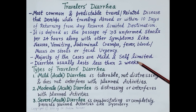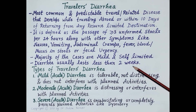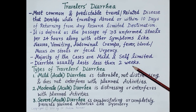A majority of cases of travelers' diarrhea are mild and self-limited; therefore treatment is mostly not required, and if treatment is given it is supportive. Diarrhea usually lasts for less than two weeks and is therefore termed acute diarrhea — so travelers' diarrhea is a type of acute diarrhea.